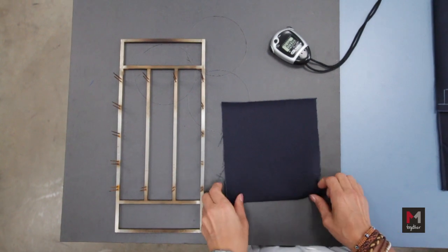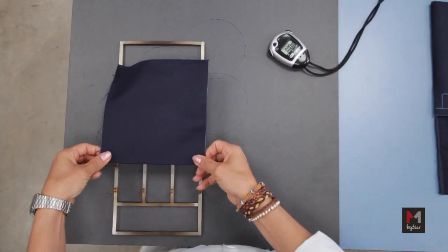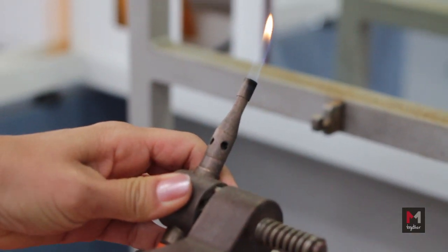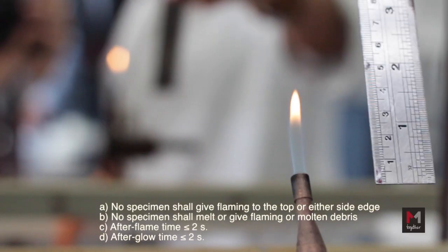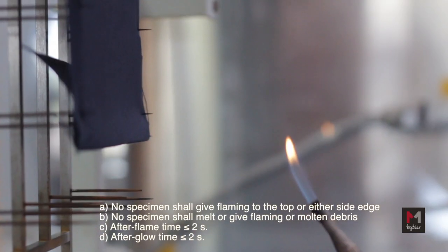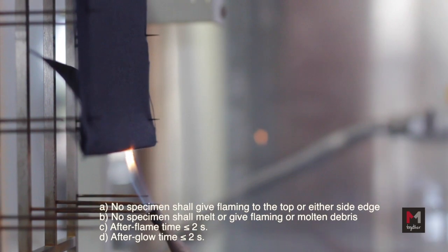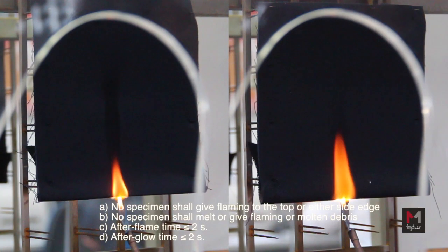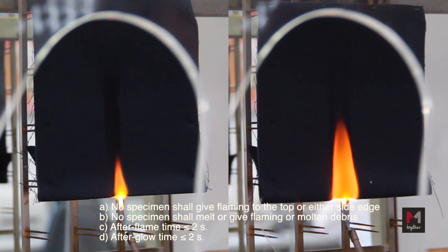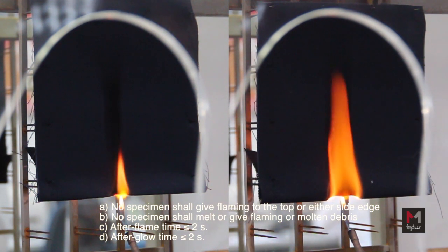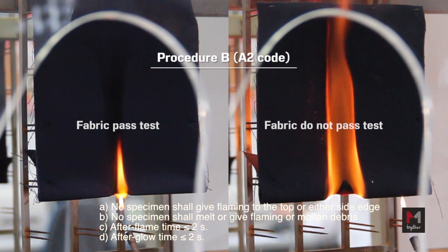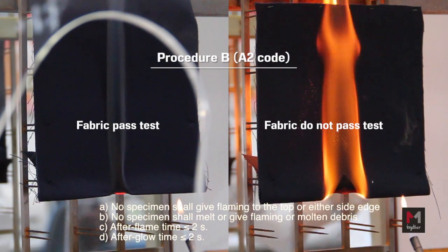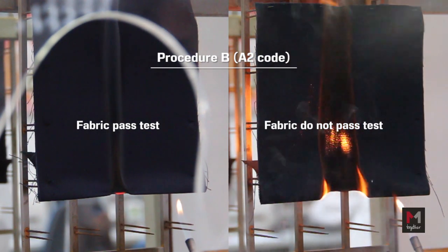When tested according to Procedure B, the flame is applied at a 30 degree angle to the fabric. It shall meet the following requirements: No specimen shall flame at the top or on either side. No specimen shall melt or have flaming or molten debris. The mean value of after-flame time shall be less than or equal to 2 seconds. The mean value of afterglow time shall be less than or equal to 2 seconds.